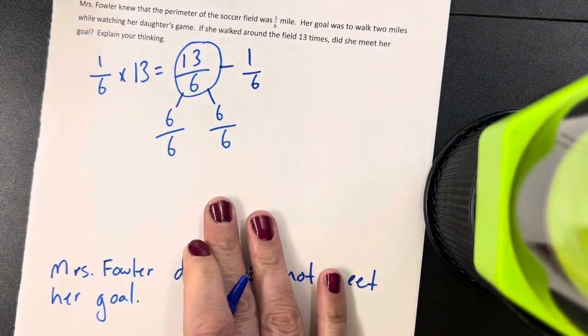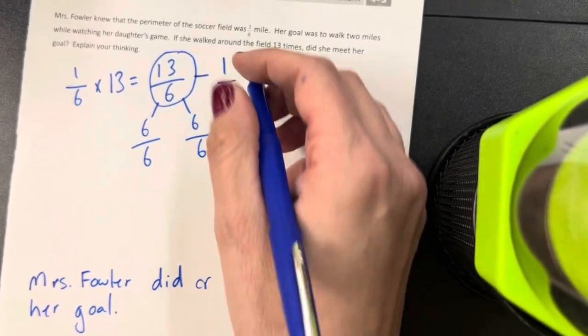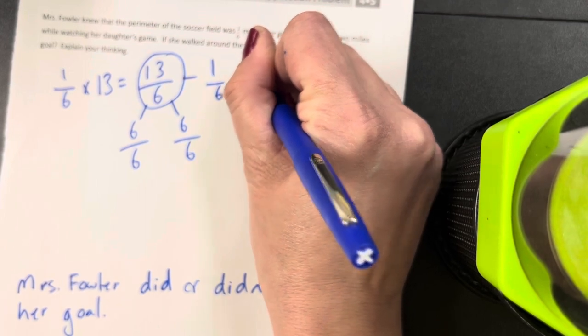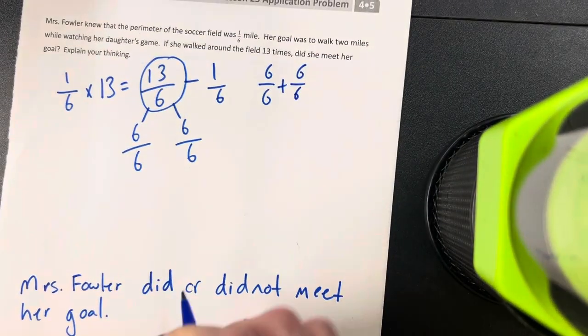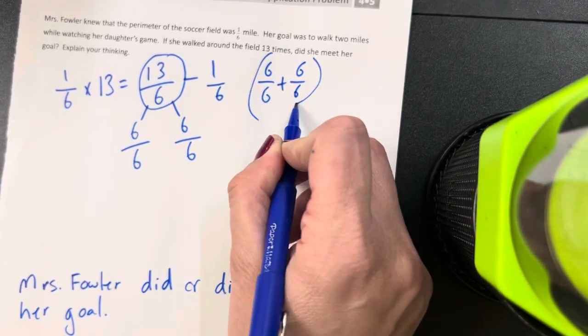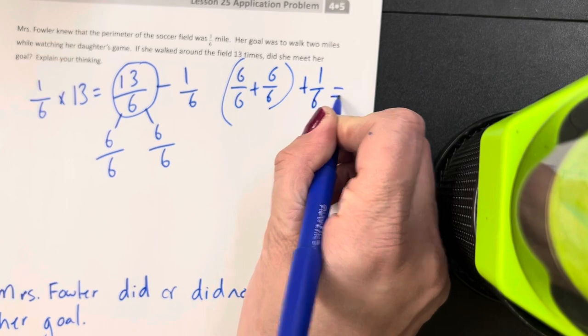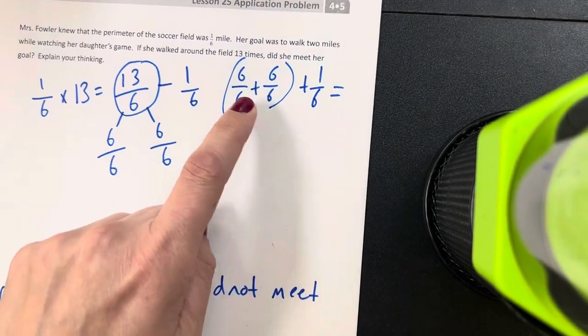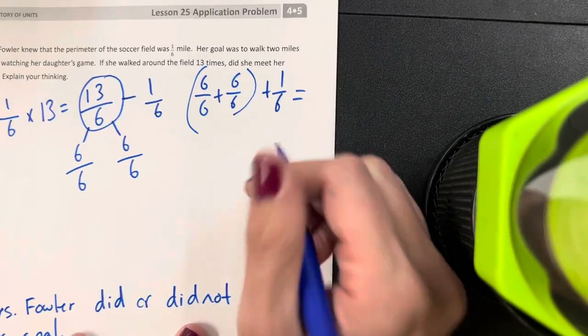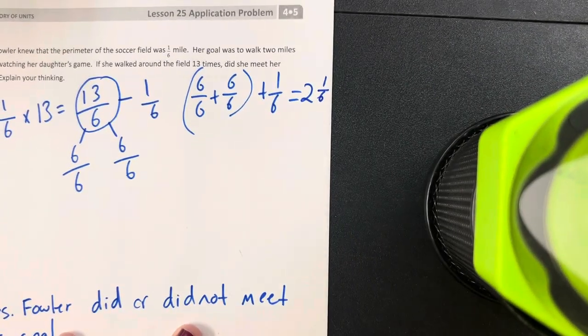I can turn this into an addition sentence because I know that six-sixths is equal to one whole. I could write it like this: six-sixths plus six-sixths, and put parentheses around it, plus one-sixth equals, I'm going to turn it into a mixed number. So one whole plus one whole equals two plus one-sixth. That is my answer.